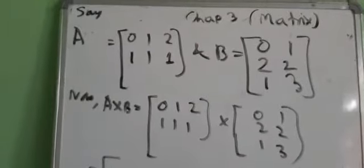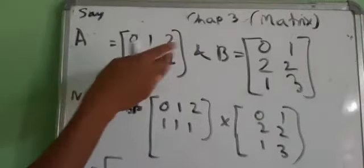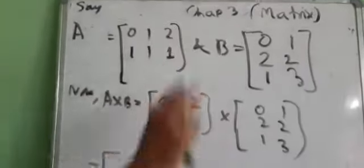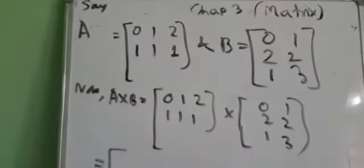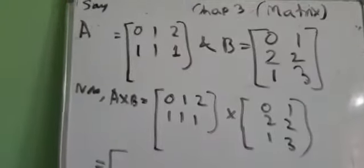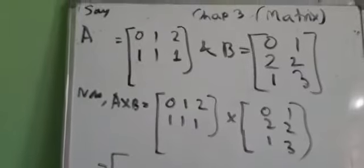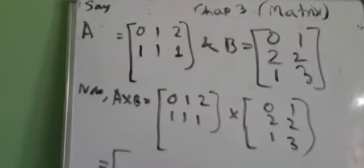Now we take an example. Say A equals this, B equals this. Now we have to find A cross B — that means the multiplication between A and B.